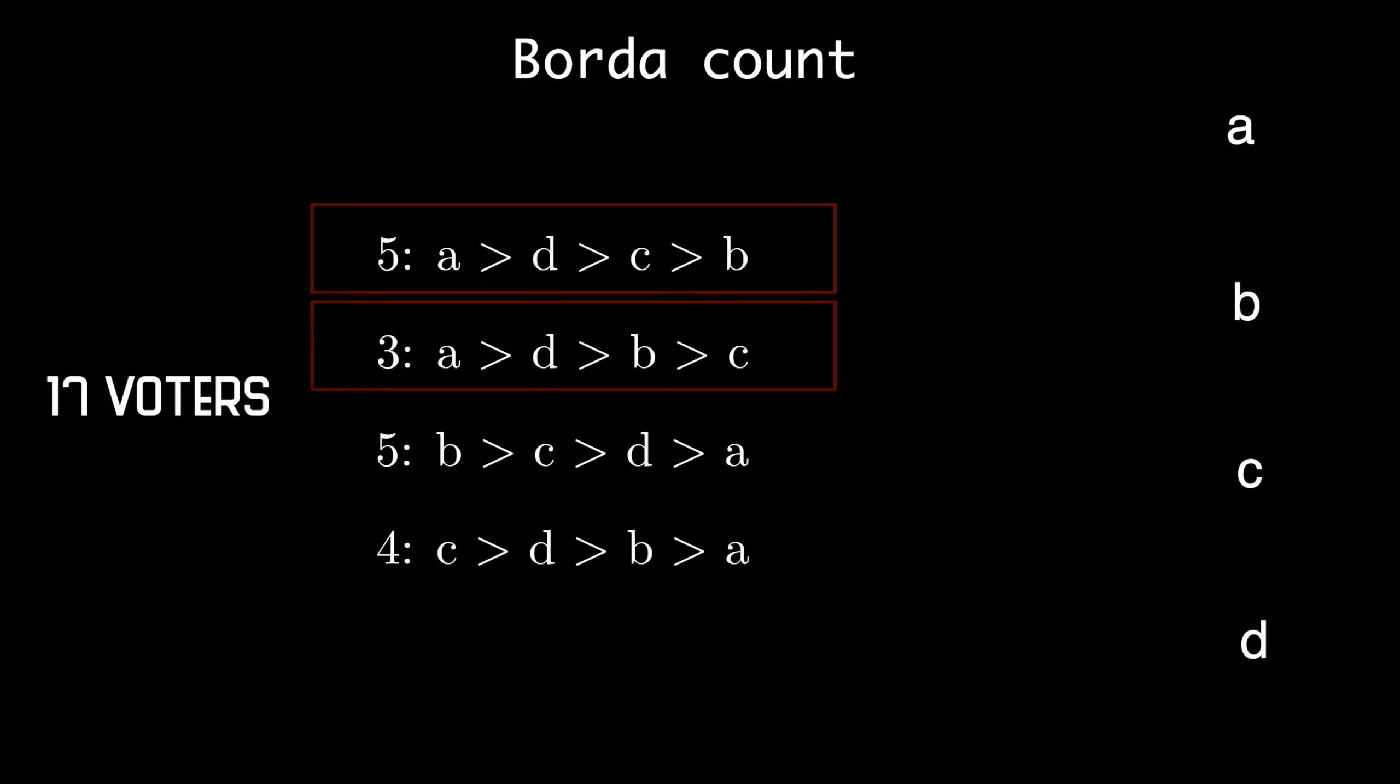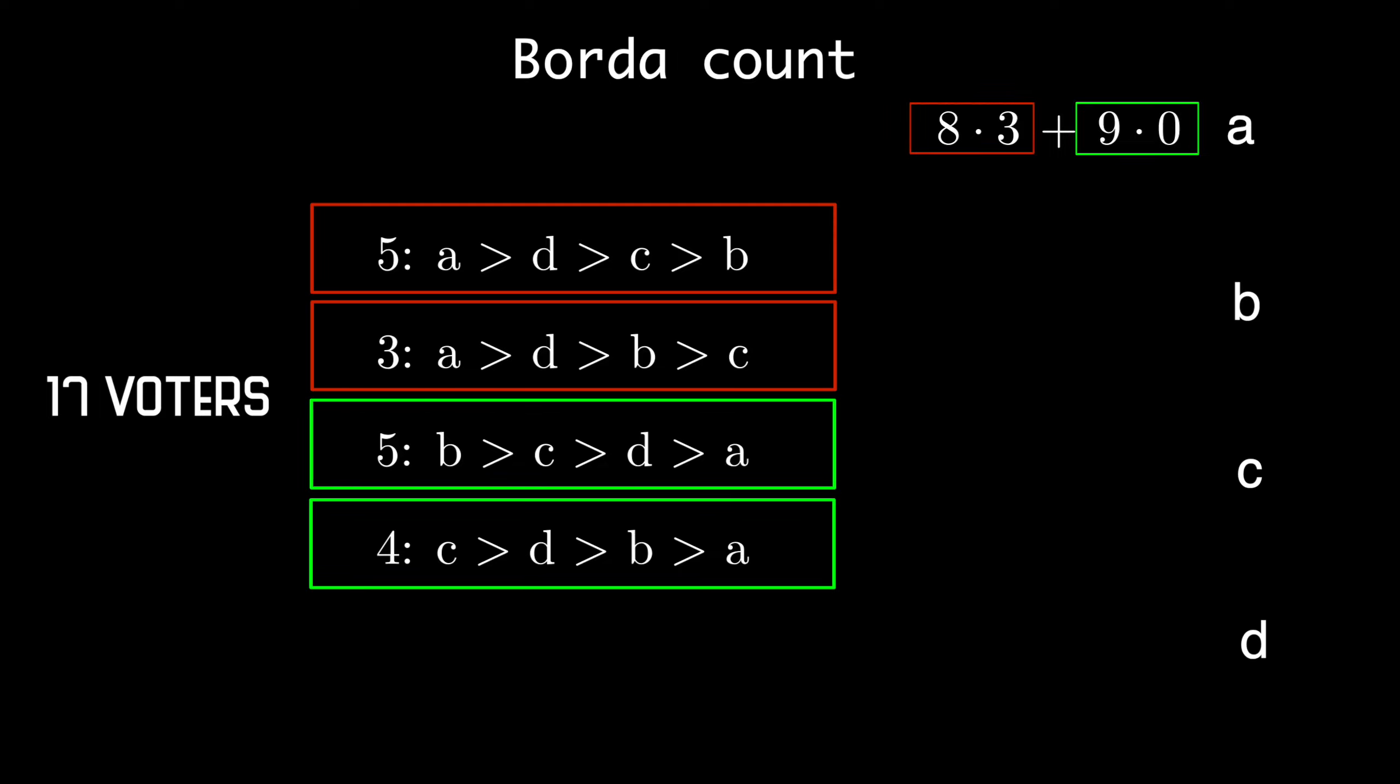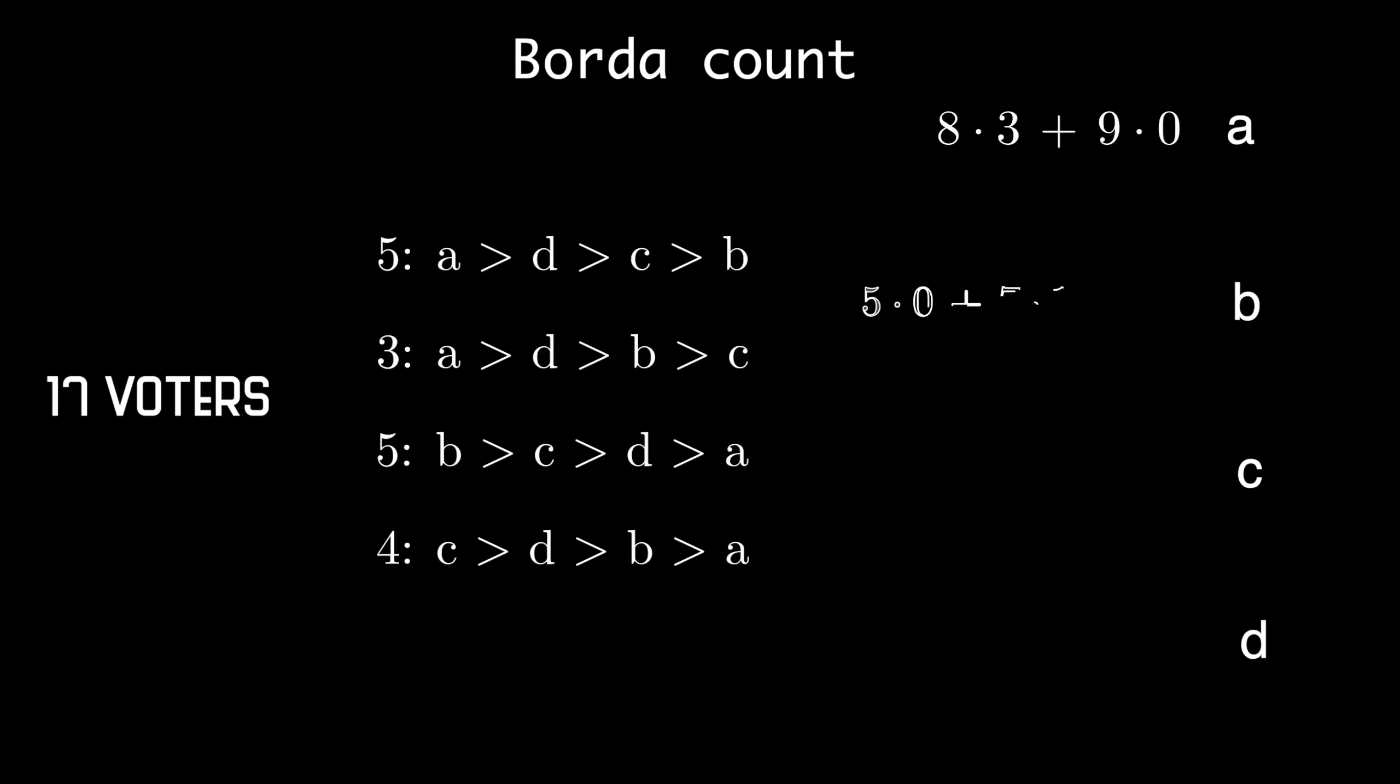But let us now apply the Borda count. A, for example, will get 8 times 3 plus 9 times 0 scores. Calculating this for the rest of the candidates, we see that D becomes a winner, and C takes the second place.